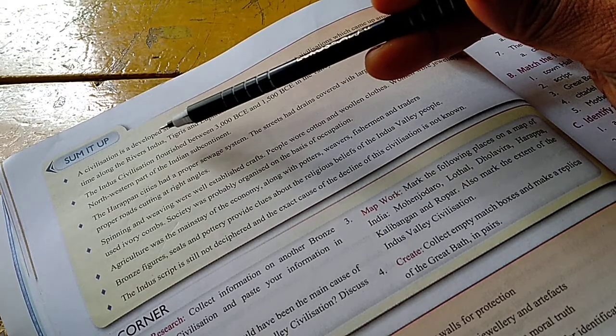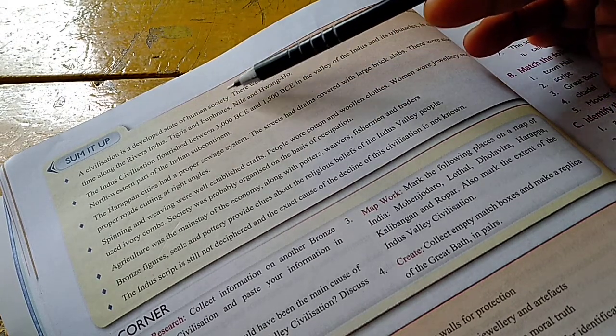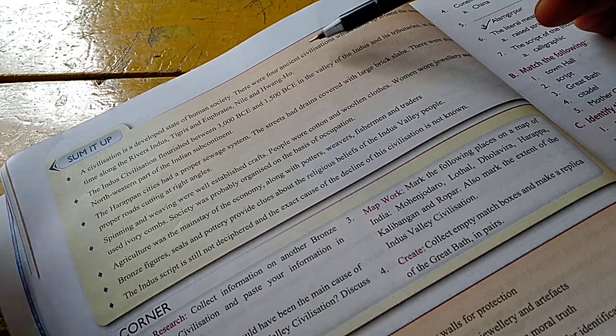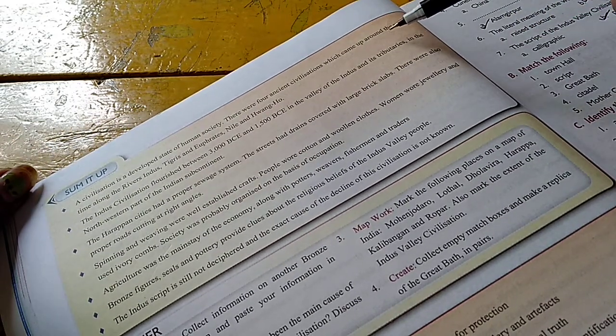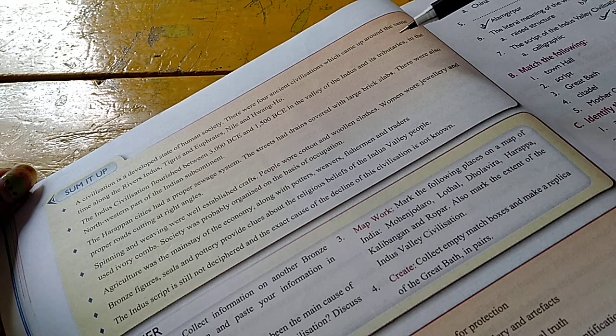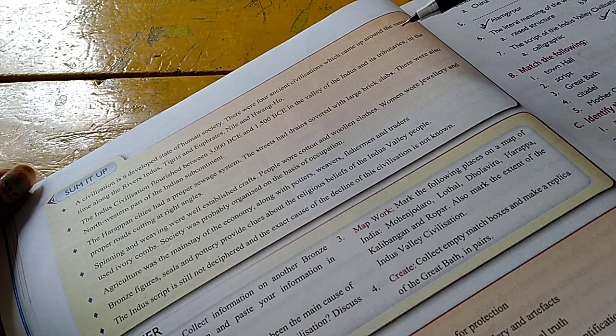You must know what the main points were in the chapter, which were the main points that you should always remember. A civilization is a developed state of human society. There were four ancient civilizations which came up around the same time along the rivers Indus, Tigris and Euphrates, Nile and Huang He.